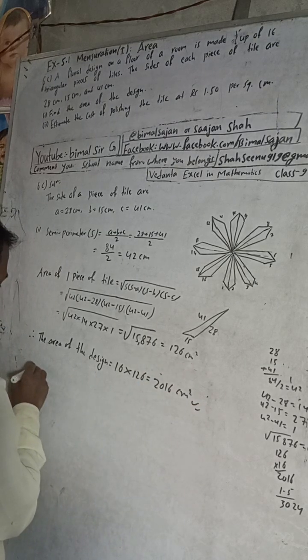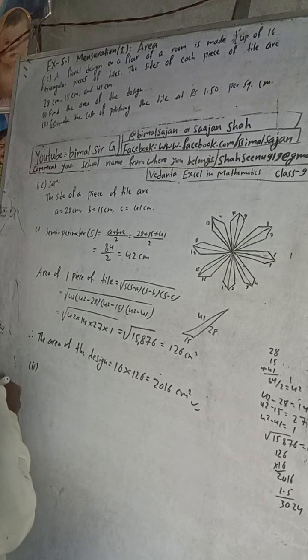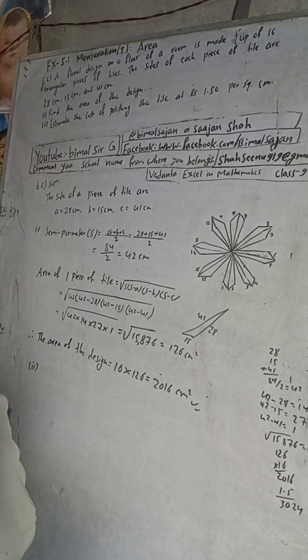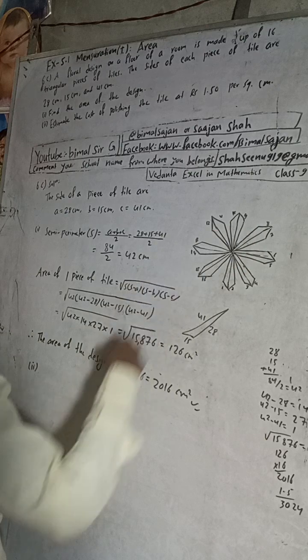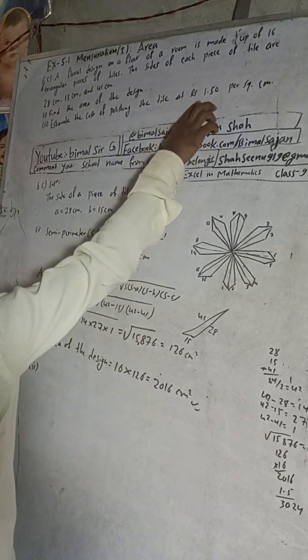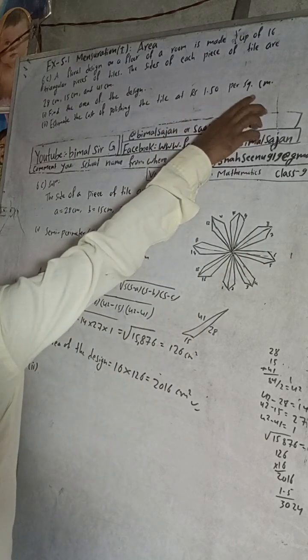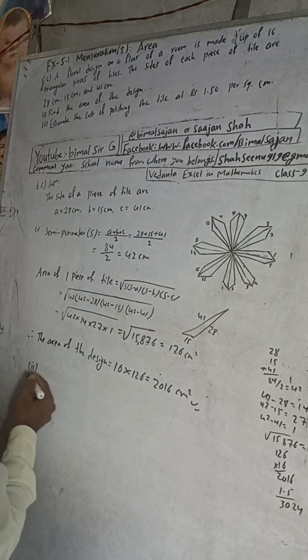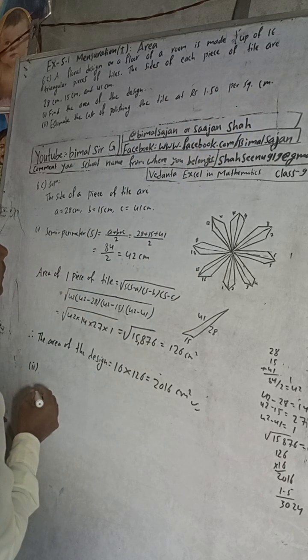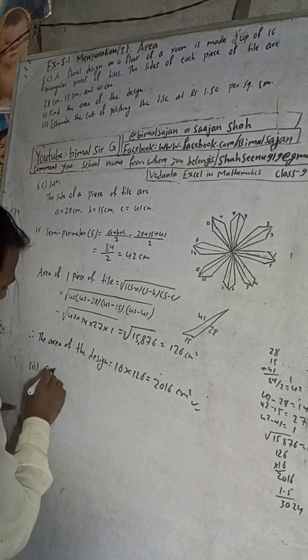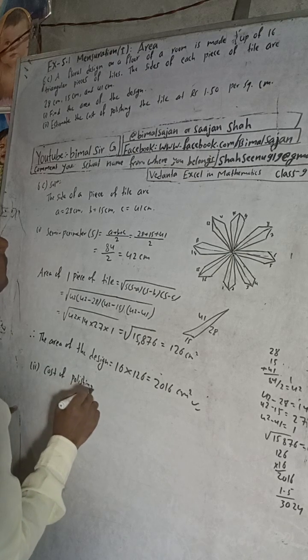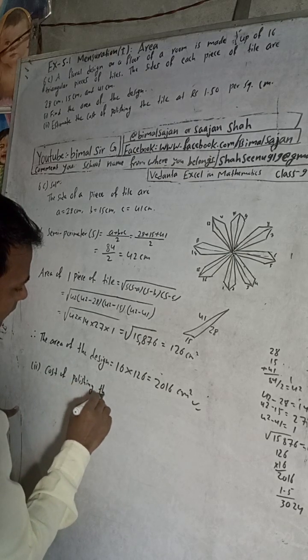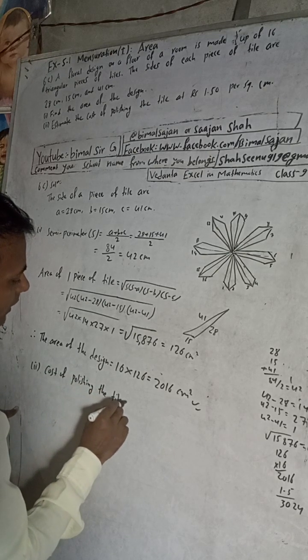Now number two. Estimate the cost of polishing the tile at 150 per square cm. Polishing, so when the polish is done, this will be done in this floral part. So we can write from here, cost of polishing the tile is equal to what.